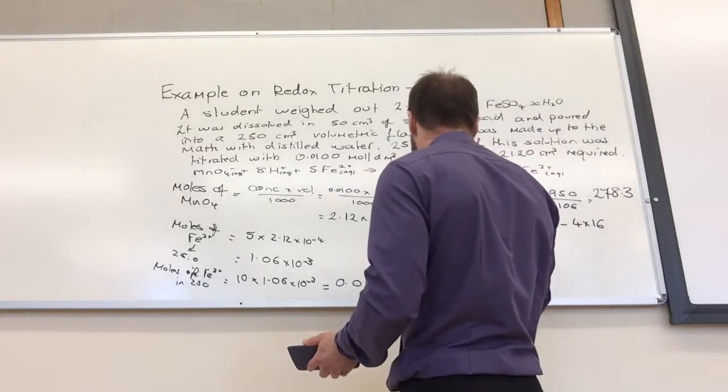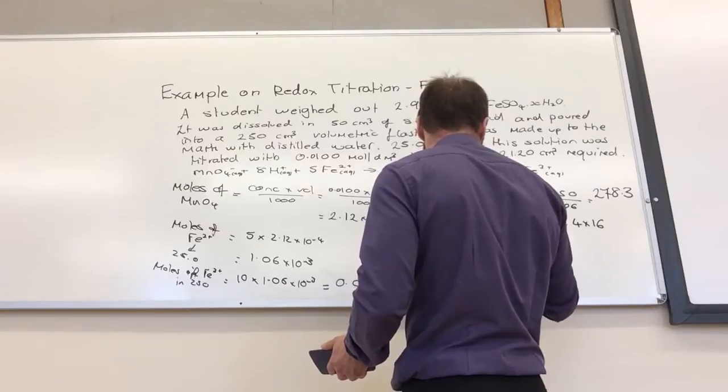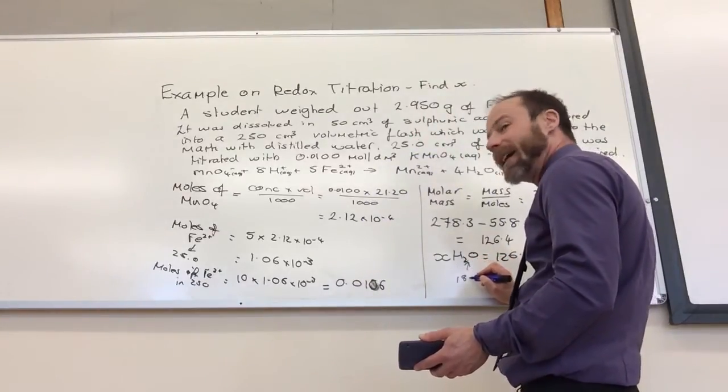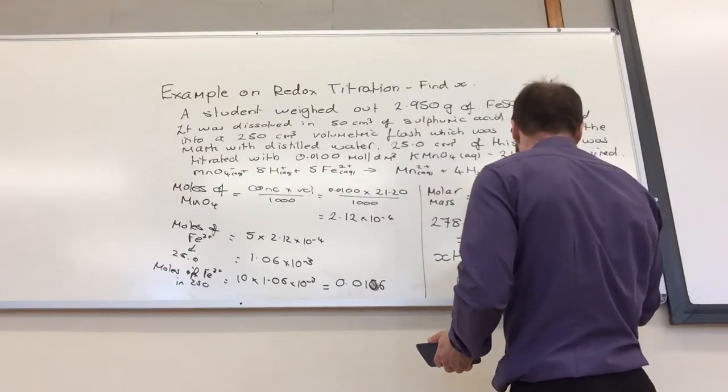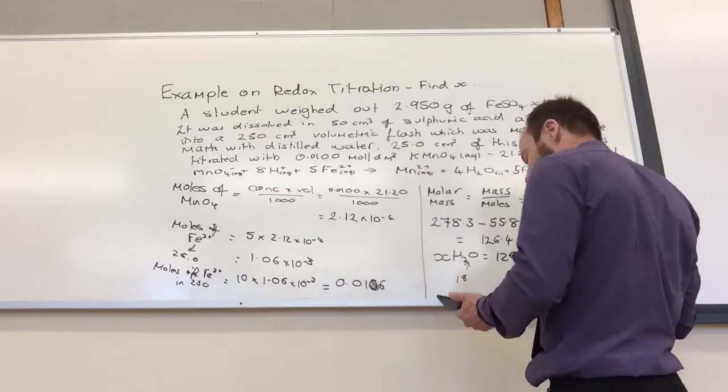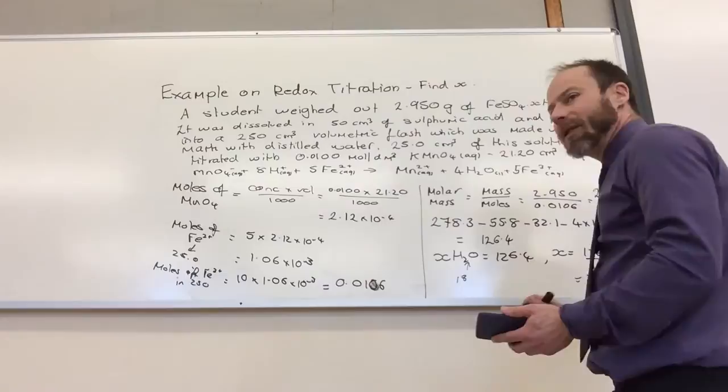How can I find X? Yeah, cool. So, I know that xH₂O equals 126.4. Each water has a molar mass of 18. So, x equals 126.4 over 18, which equals... 7.